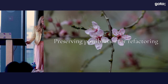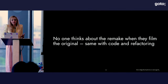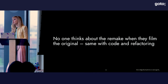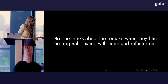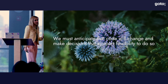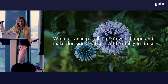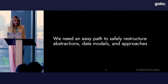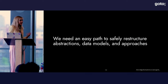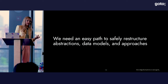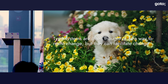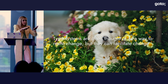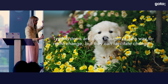We can start with preserving possibilities for the refactor. When writing code, we're usually swept up in the electrifying anticipation of the release — we're not peering out to the hazy horizon of 'this will need to be refactored.' Unlike movies, our software is not a one-and-done thing; we really need to anticipate that the code will change and make decisions that support the flexibility to do so. At a high level, we need an easy path to safely restructure abstractions, data models, and approaches to our problem domain. Type systems can actually help us here. The traditional view is that type systems are a way to resist change, but type systems can actually facilitate change by showing you what parts of the system are affected by the ripples of your changes — a second- or third-order effect of type systems that's often overlooked.